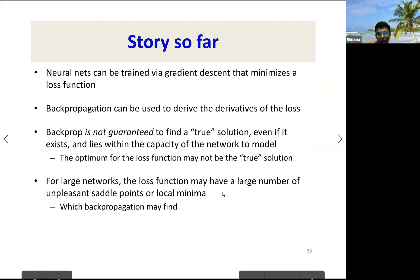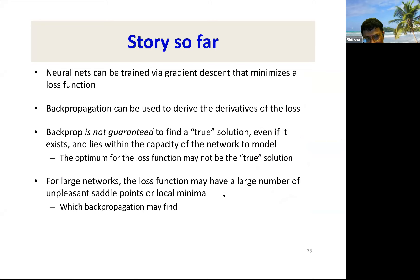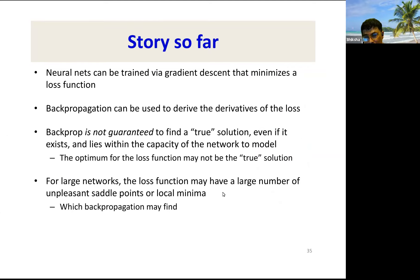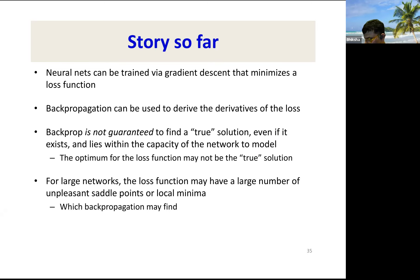Here's the story so far: neural networks can be trained via gradient descent that minimizes the loss function. Backpropagation can be used to derive the derivatives of the loss. Backprop is not guaranteed to find a true solution even if it exists and lies within the capacity of the network. The optimum for the loss function may not be the true solution. For large networks, the loss function may have many unpleasant saddle points and local minima which backpropagation may find and which we would like to avoid.